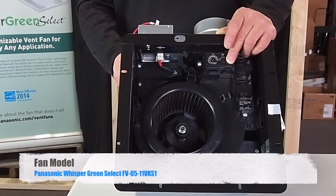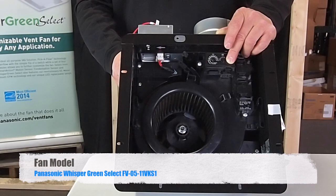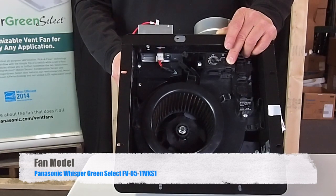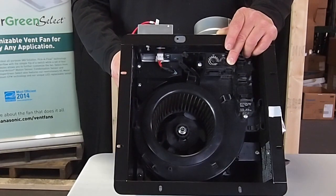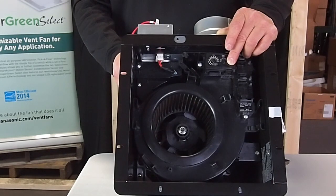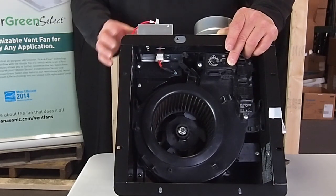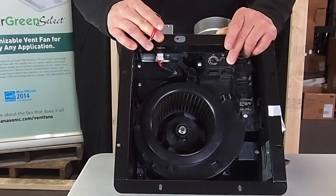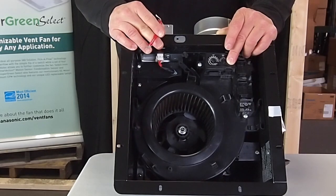The fan we are wiring is a Panasonic Whisper Green Select FV0511VKS1. This fan has a multi-speed timer pre-installed. We will use the red signal wires to get the fan to do spot ventilation.